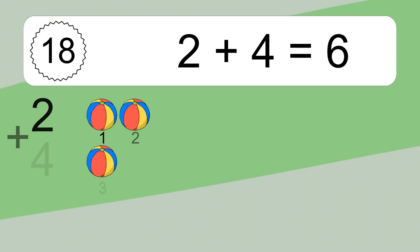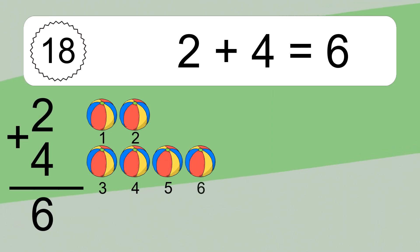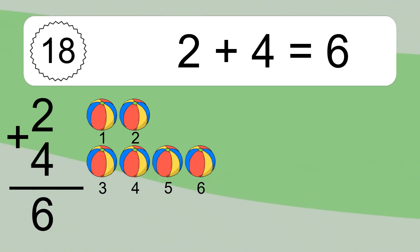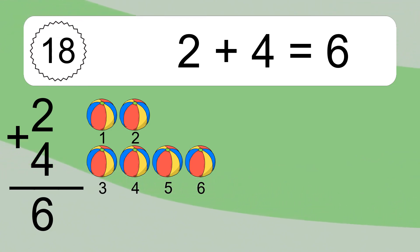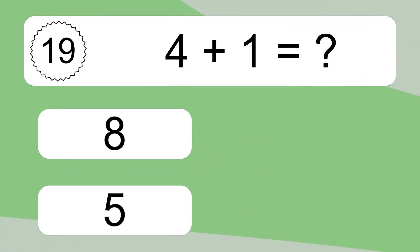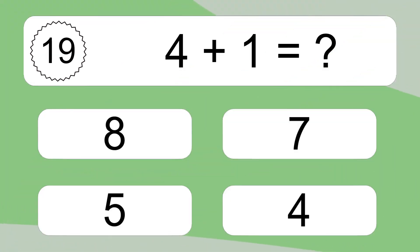2 plus 4 equals 6. Let's count it: 1, 2, 3, 4, 5, 6. 4 plus 1 equals what?